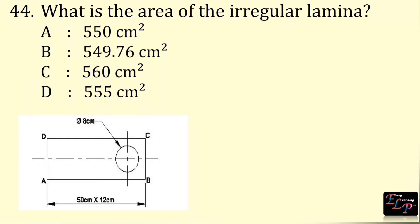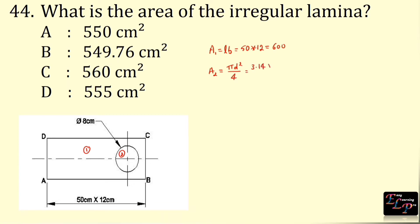What is the area of the irregular lamina? Here we have two shapes: one is a rectangle, the second is a circle. Area of the rectangle is length × breadth = 15 × 12 = 600. Area of the circle is πd² ÷ 4 = 3.14 × 8² ÷ 4 = 50.24. The circle is removed from the rectangle, so total area is A1 − A2: 600 − 50.24.